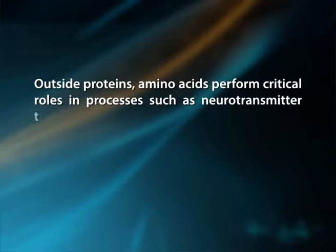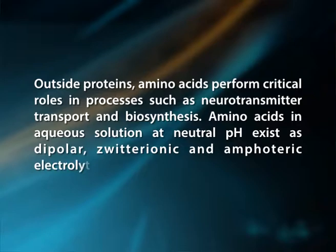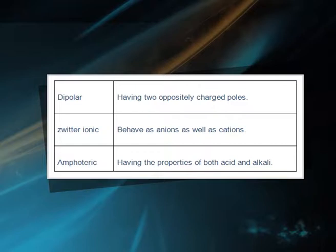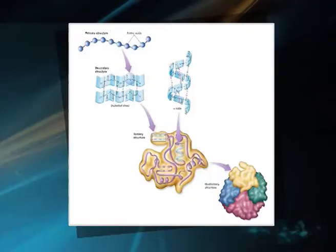Amino acids in aqueous solution at neutral pH exist as dipolar, zwitterionic, and amphoteric electrolytes. They are said to be dipolar because of two oppositely charged poles. Amino acids behave as anions as well as cations and hence are said to be zwitterionic. Amino acids are amphoteric in nature because they have the properties of both acid and alkaline. Structural features of proteins are usually described at four levels of complexity: primary structure, secondary structure, tertiary structure, and quaternary structure.